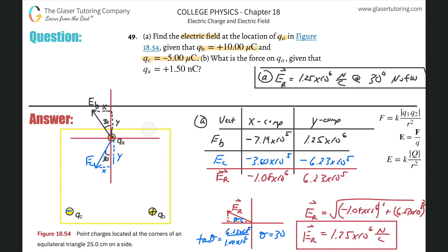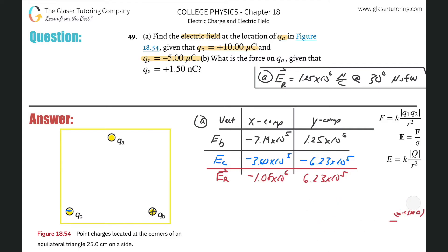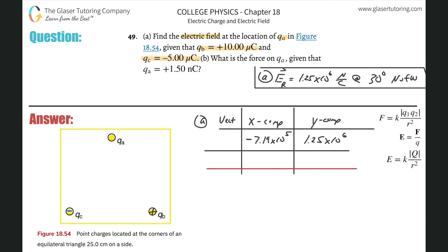Now let's do letter B — finding the force on q_a. Check out number 48 for a detailed walkthrough of forces; I'm going to run through this one. We erase everything and start again. q_a is positive (+1.50 nC), q_b is still positive, and q_c is still negative — always establish signs first.